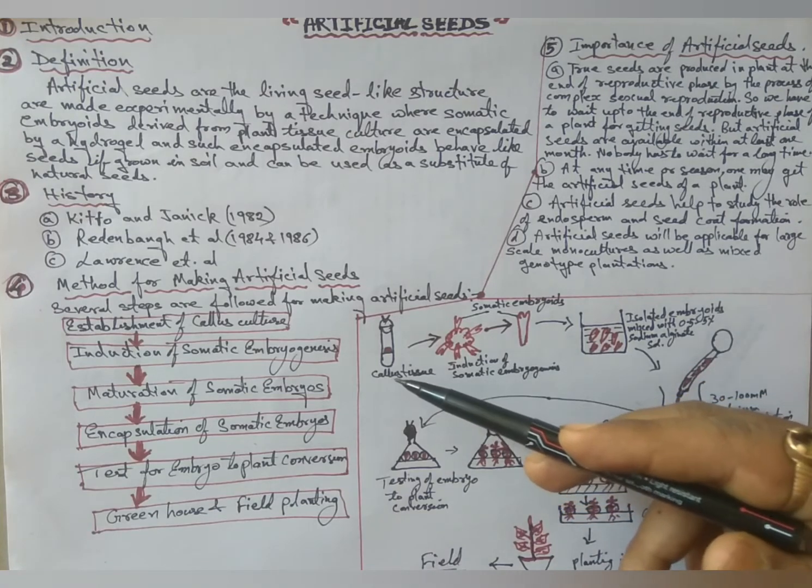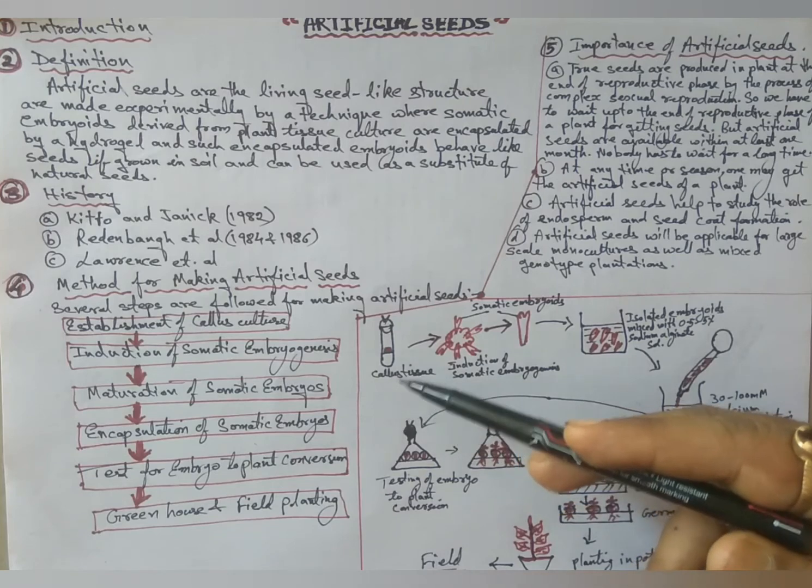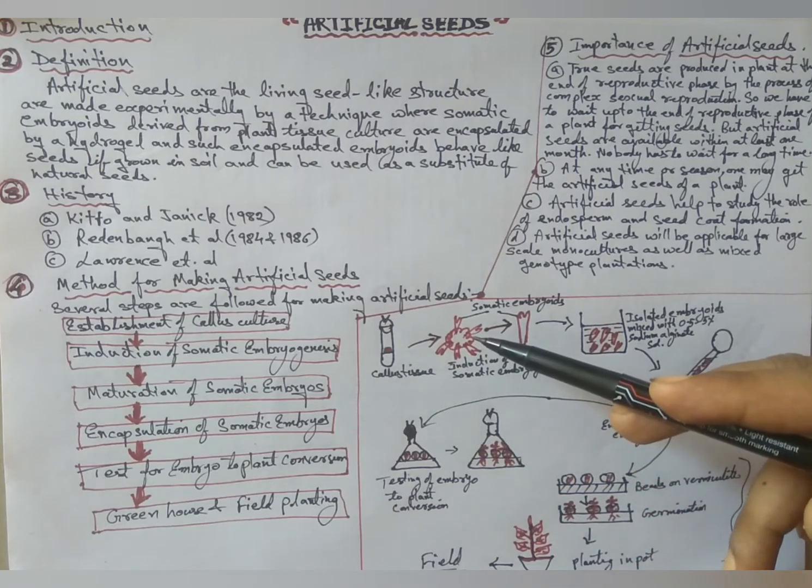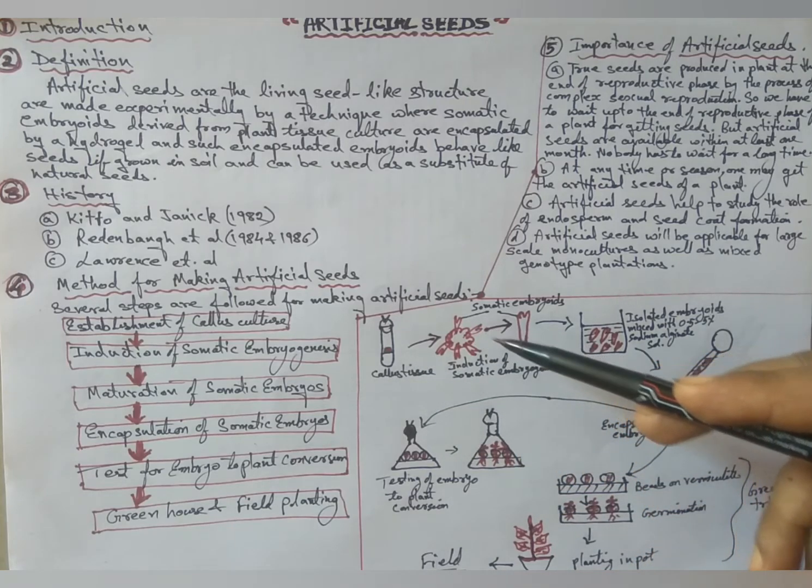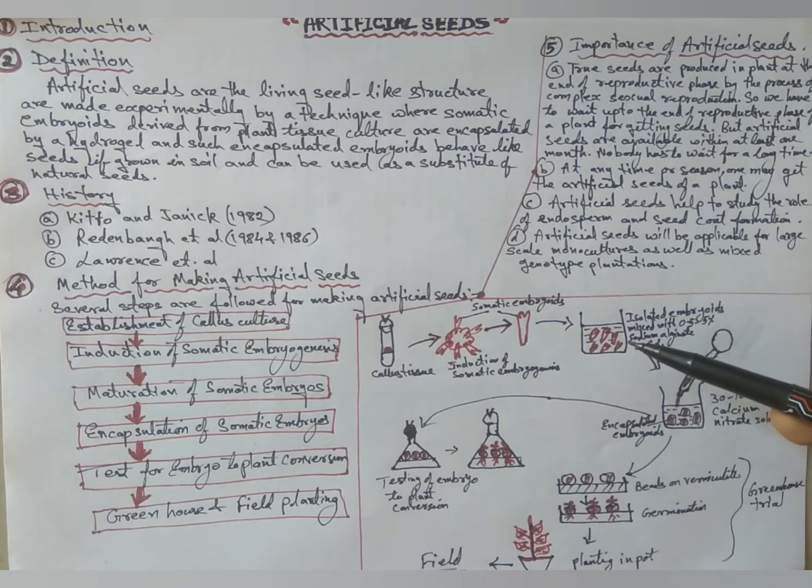First we establish callus culture in artificial media, then induction of somatic embryogenesis, maturation of somatic embryos. Then isolated somatic embryos are mixed with 0.5 to 5 percent sodium alginate and dropped into 3200 micromolar calcium nitrate solution.